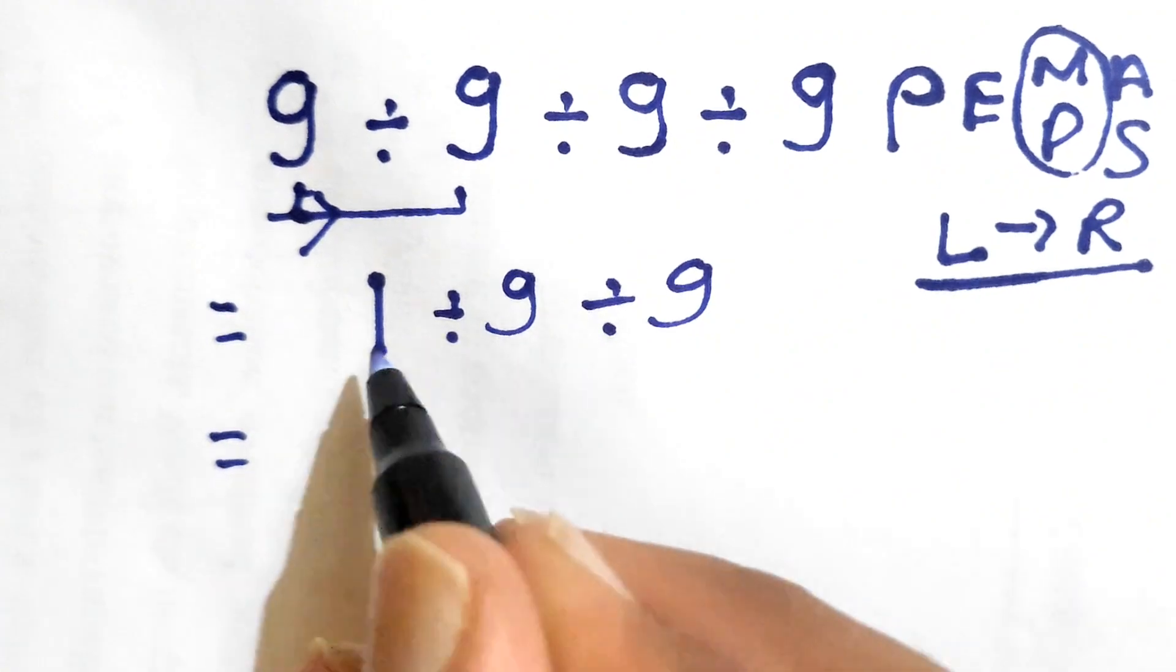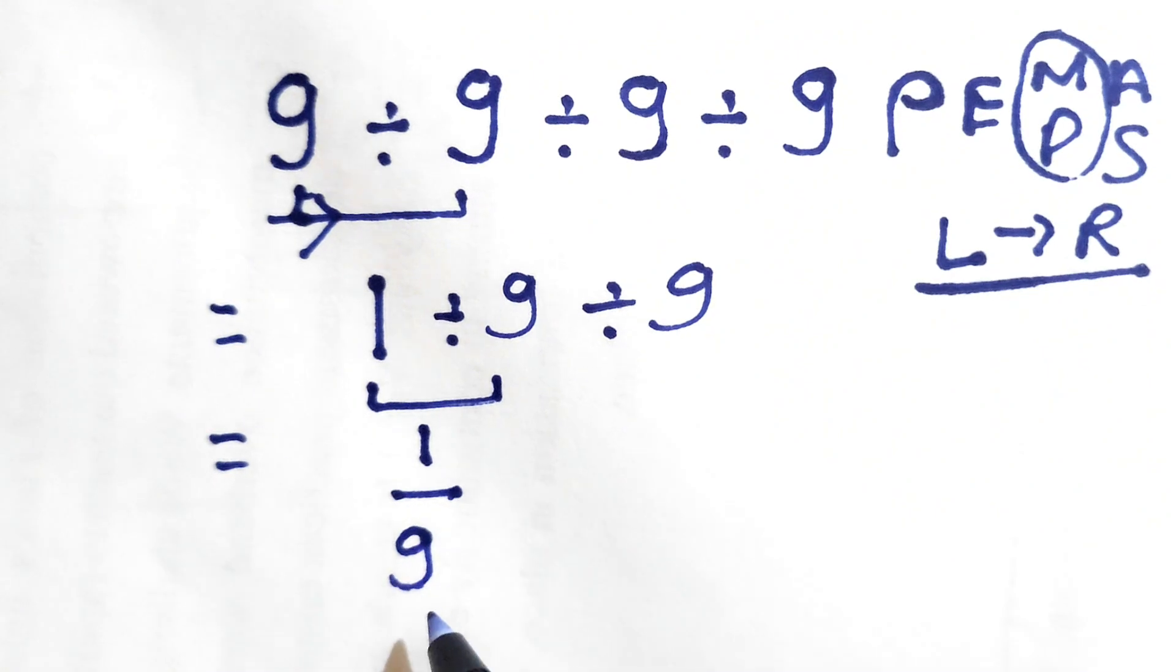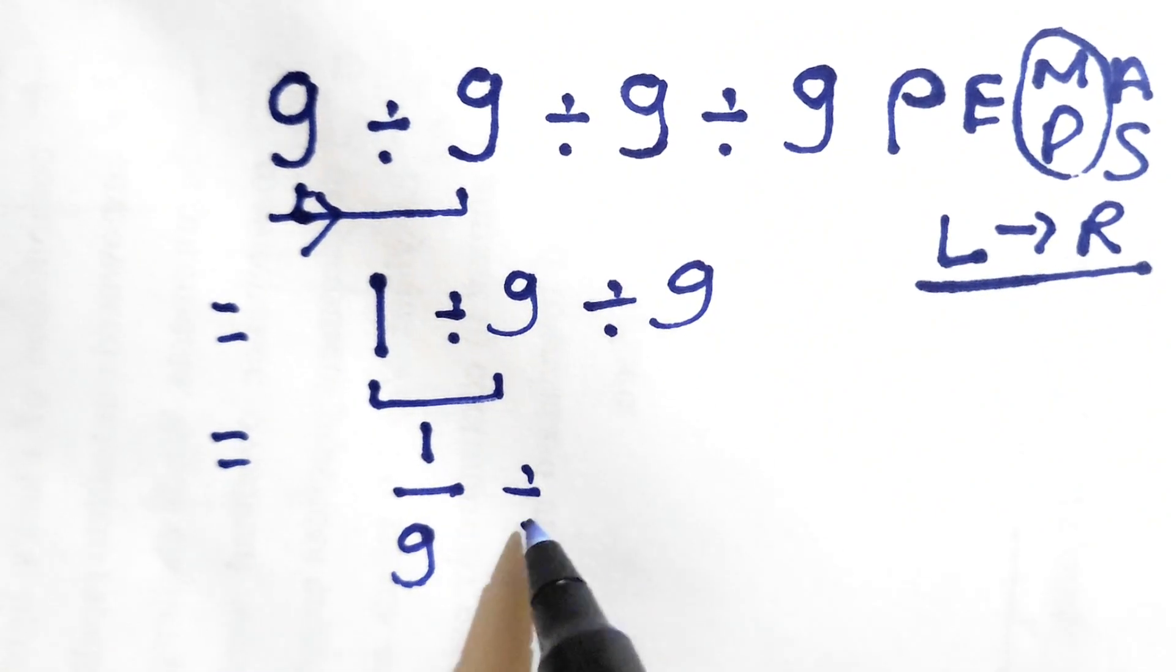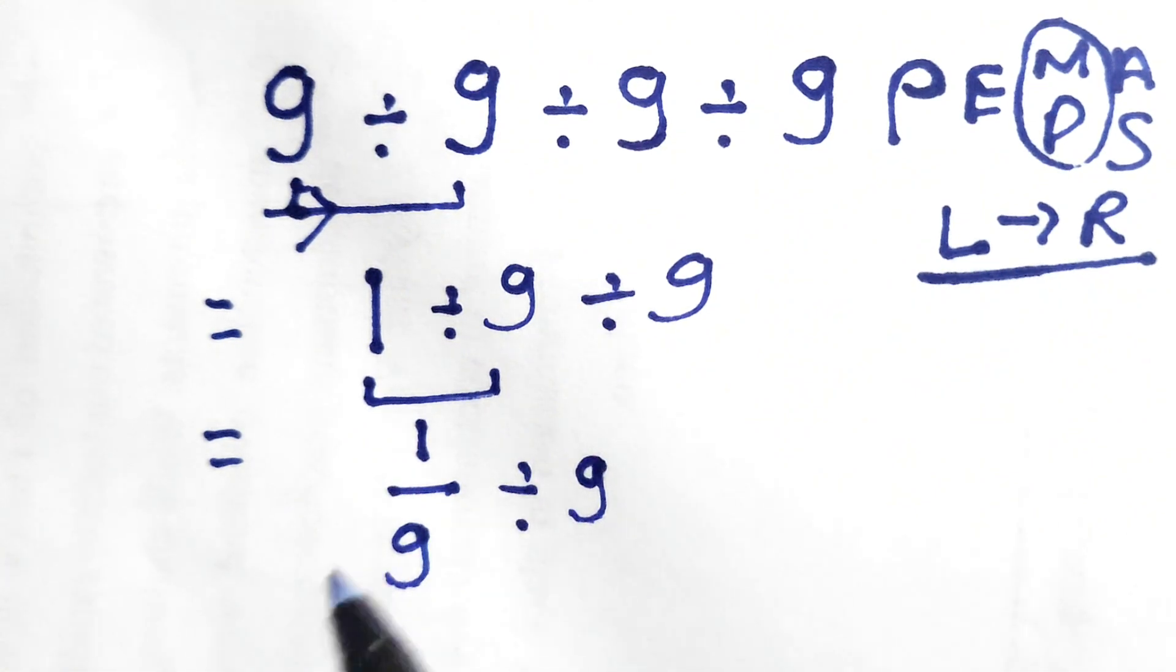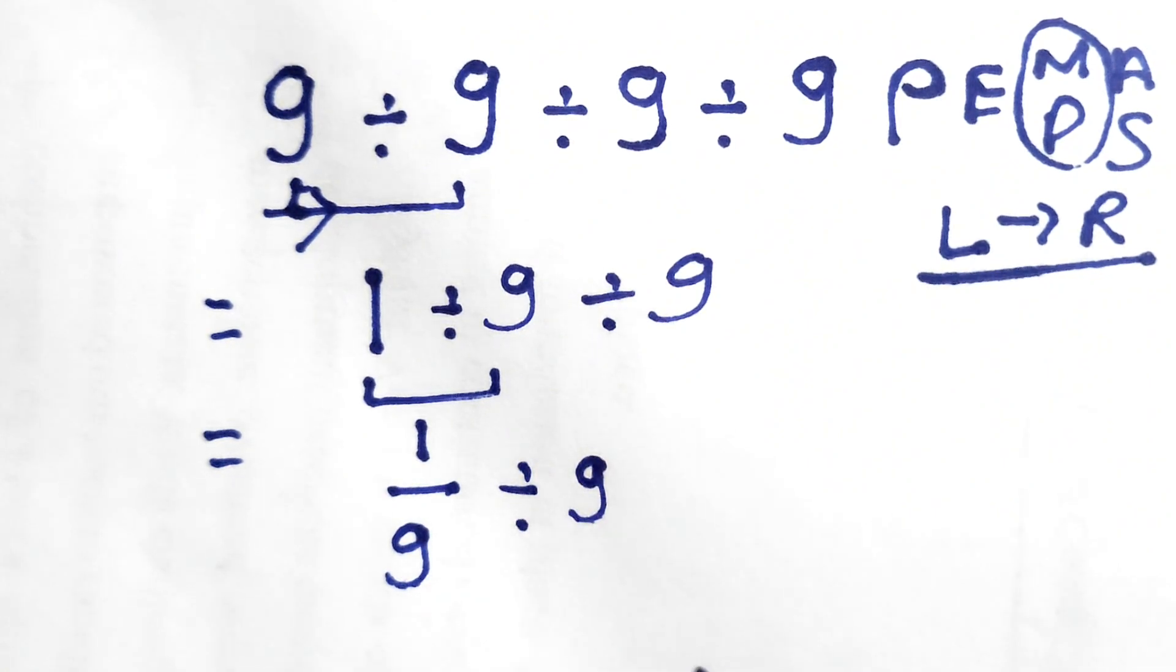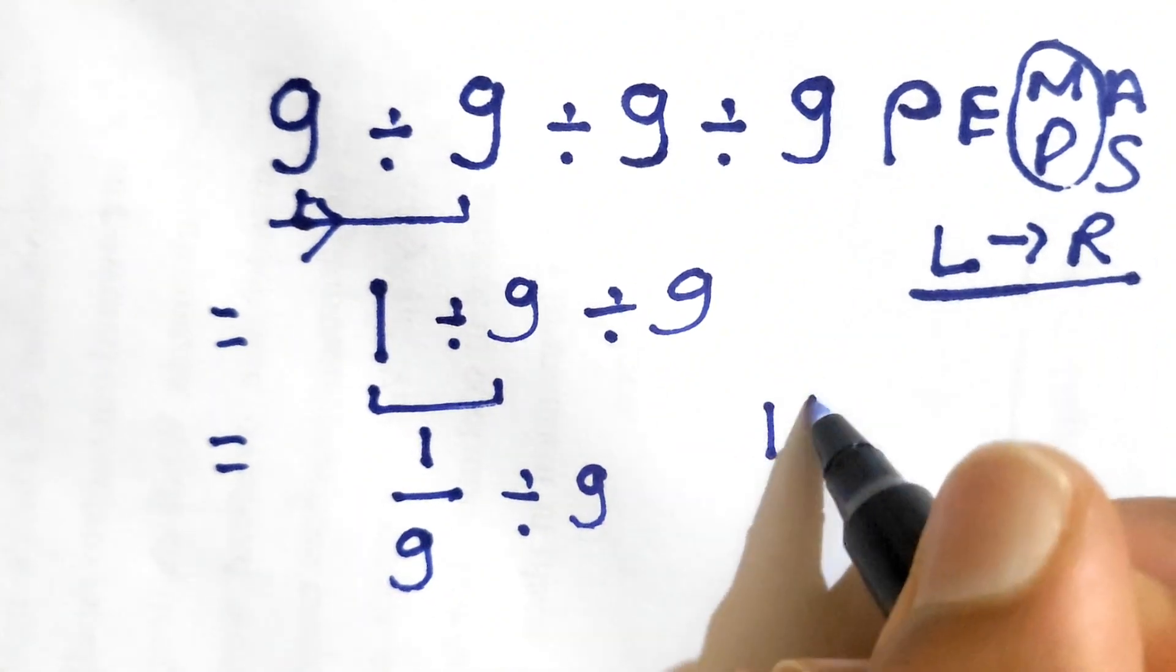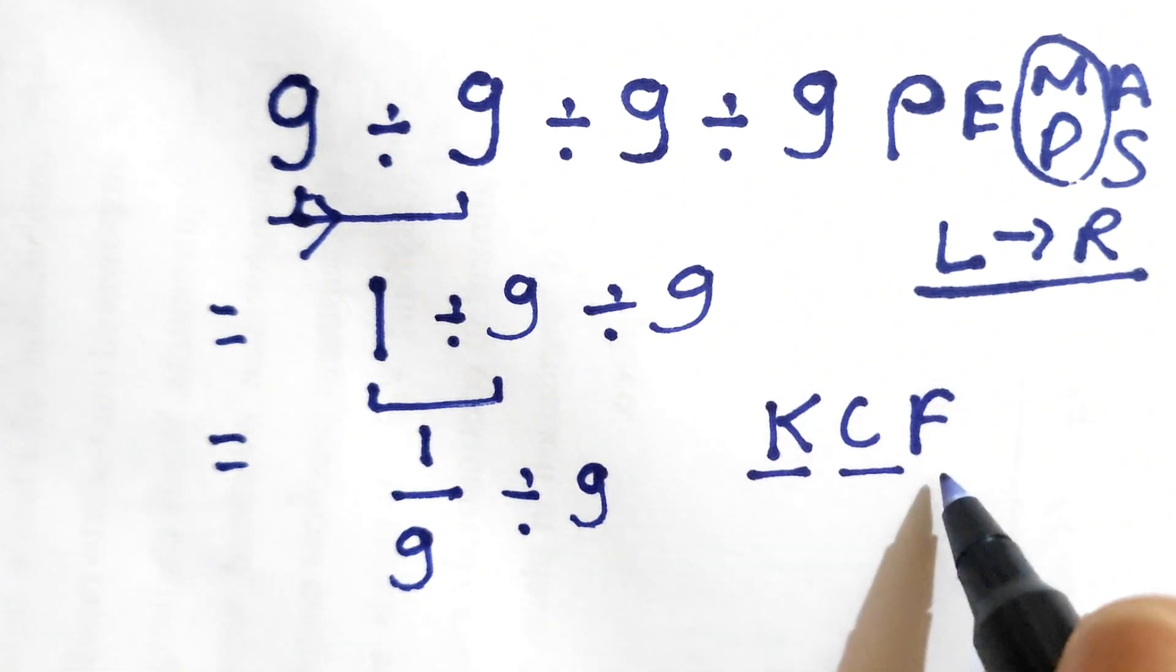Now we can write 1 divided by 9 as 1 over 9, and we'll write divided by 9 as it is. Now here comes an interesting part - we need to follow one more rule to solve this expression. As we are dividing fractions, it is also called the KCF rule, which stands for keep, change, and flip.